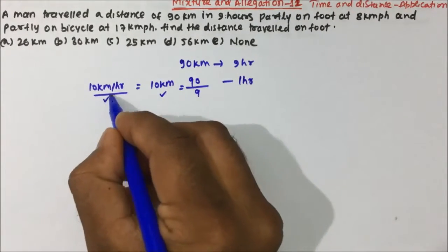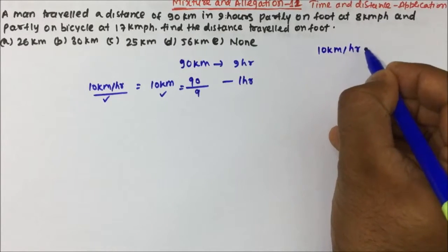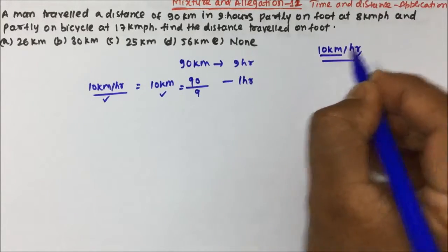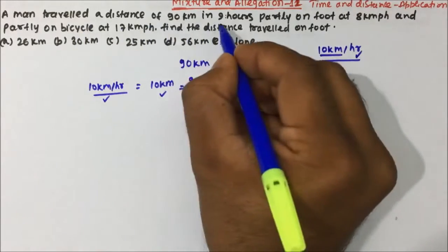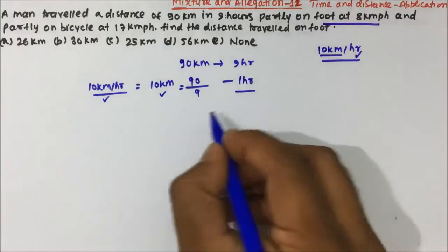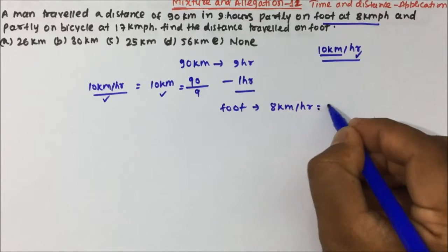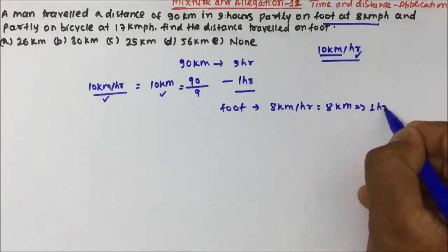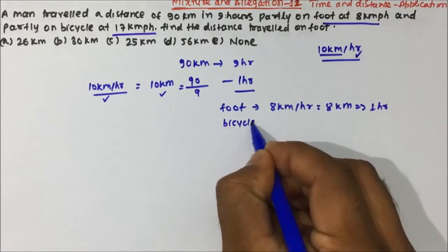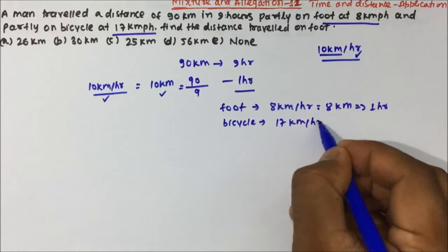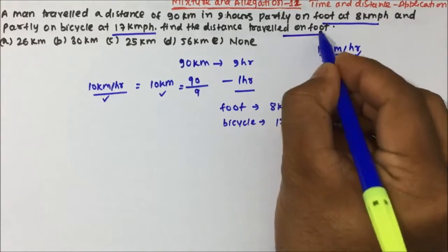Ten kilometers per hour means in one hour a person is travelling 10 kilometers. The man travelled 90 kilometers in 9 hours, partly on foot at 8 kilometers per hour — that is 8 kilometers in one hour — and partly on bicycle at 17 kilometers per hour, meaning 17 kilometers in one hour. We have to find the distance travelled on foot.